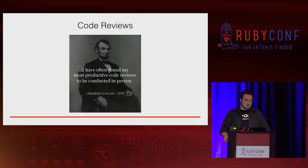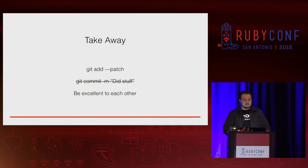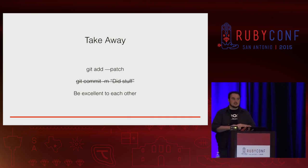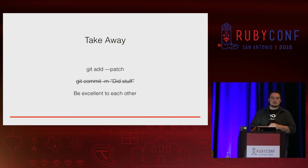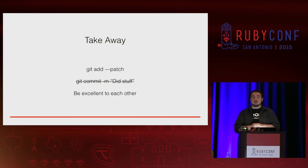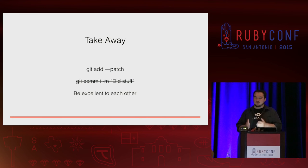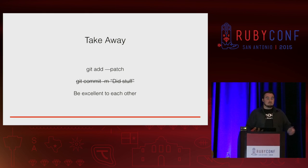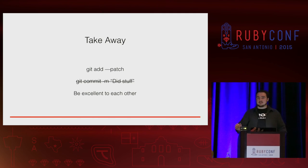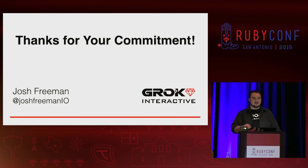The two things I want you to do the most: stop using git add period or git add dash a — there are times for it when it's really simple, but by and large start adding in patches. That will greatly encourage how much you want to group things in logical chunks. Also, stop committing with the M flag — it gives you the wrong connotation of what you're trying to accomplish. As we saw with the Star Wars example, sometimes too much compression is not a good thing and the whole point gets lost. And in the code review process, be excellent to each other. Thank you.